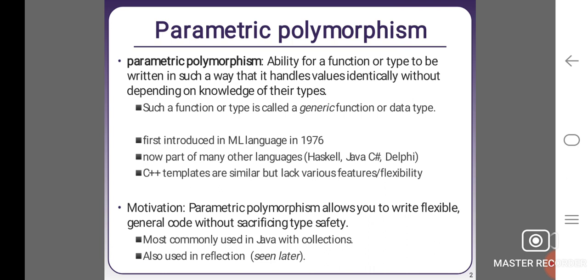The motivation of parametric polymorphism is that it allows you to write flexible, general code without sacrificing type safety. Most commonly used in Java with collections, also used in reflection.